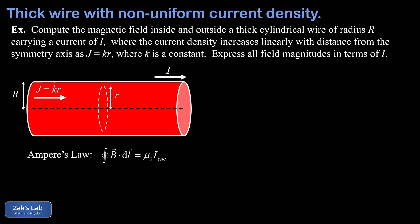In this case we're told the current density grows linearly as k times r, where r is the distance from the symmetry axis of the wire and k is a constant carrying the necessary units to make j work out to amps per square meter. So at the center the current density j is zero, and then it grows to a maximum value at the surface of the wire where the distance from the axis is big R.